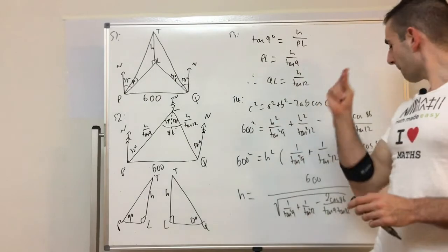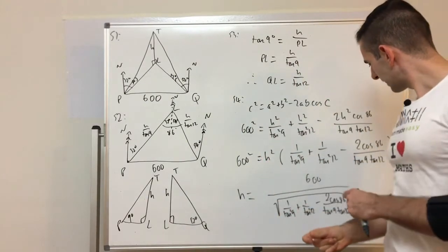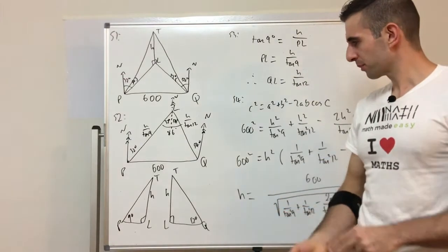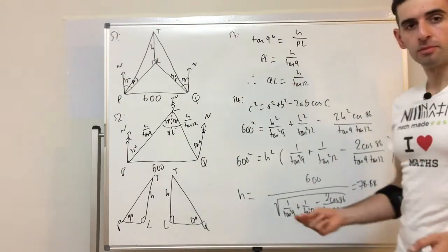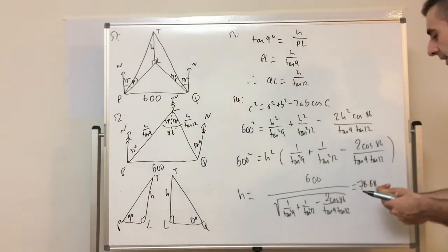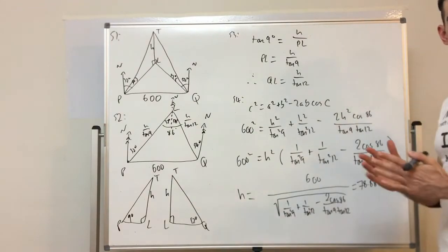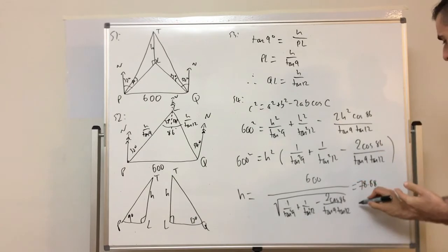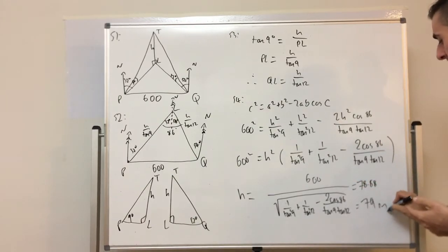Alright, so now where's the answer? So we can see we've got the answer there, 78.88. The question has shown approximately 79, well that just equals 79 metres if we round it up.